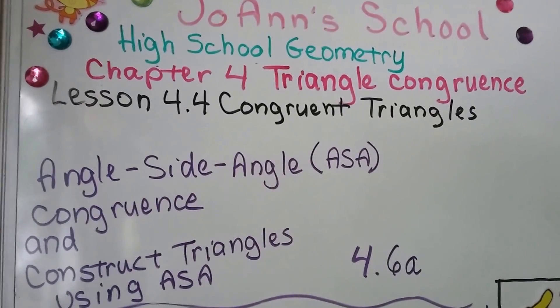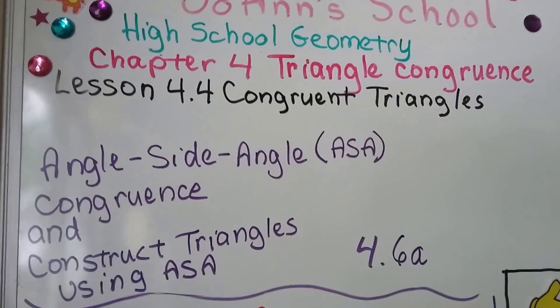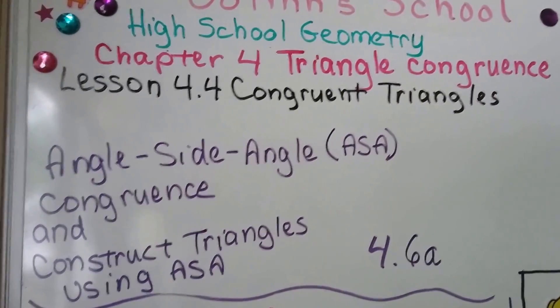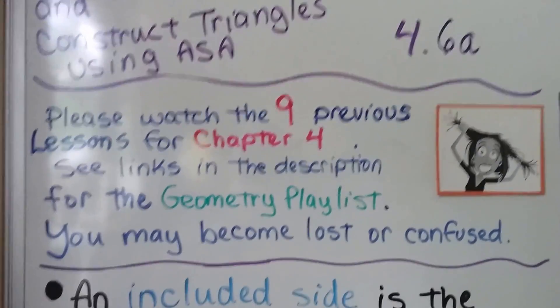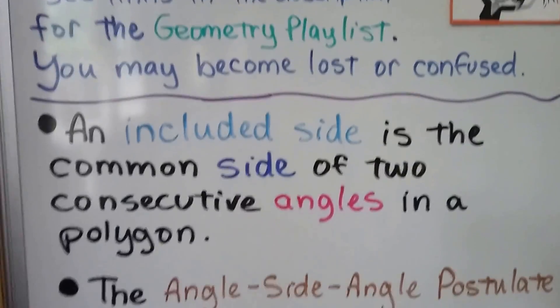Angle, side, angle, ASA congruence, and we're going to construct triangles using ASA. This is 4.6a. There's nine previous videos to this chapter, and they're in the geometry playlist in the description.